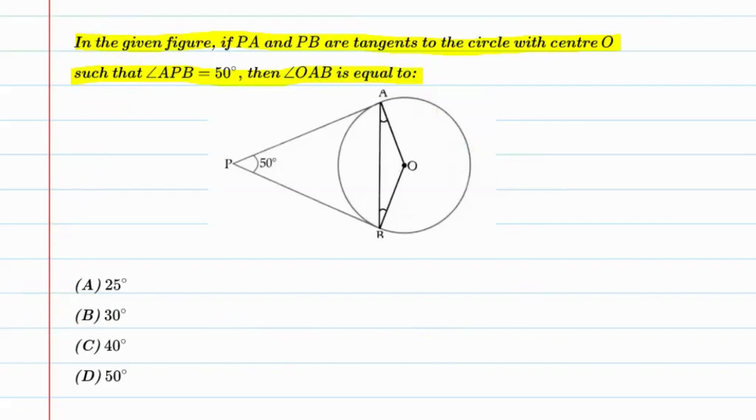If you see this question, we will make a circle given. So the center here is O, PA and PB are tangents, the points are A, P, and B. This angle below this boundary is 50. So the angle here OAB, we have to find this angle.